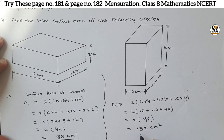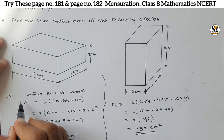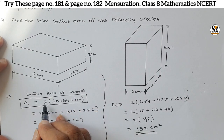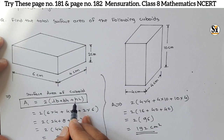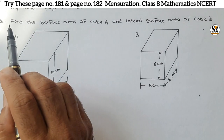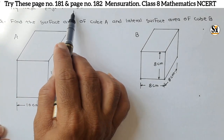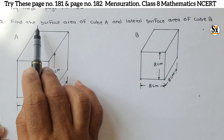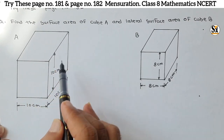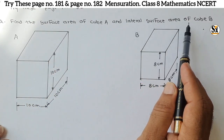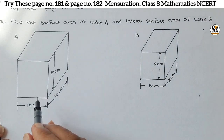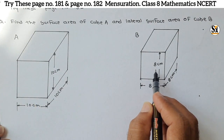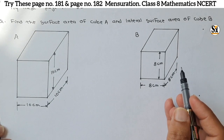Very easy calculations — we must know only the formula. The formula for surface area of a cuboid is 2 into bracket lb plus bh plus hl. Now see the next question from 'Try This' section, page 182: find the surface area of cube A and the lateral surface area of cube B.